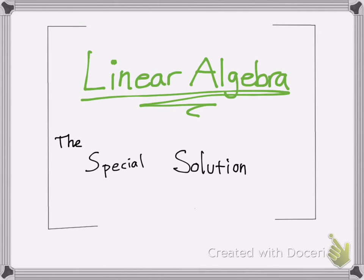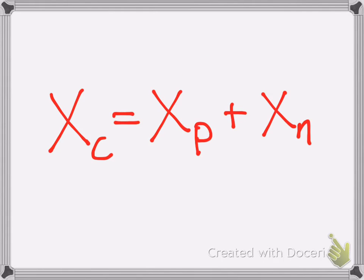Hello YouTube. Today we're going to be doing some linear algebra, and we're going to be talking about the special solution. This equation should be quite familiar to you. Pretty much this is the complete solution, or the general solution for the system. It's composed of the particular solution as well as special solutions. I did a previous video on finding the particular solution when you're given a vector to work with. Now we're going to be talking about finding special solutions.